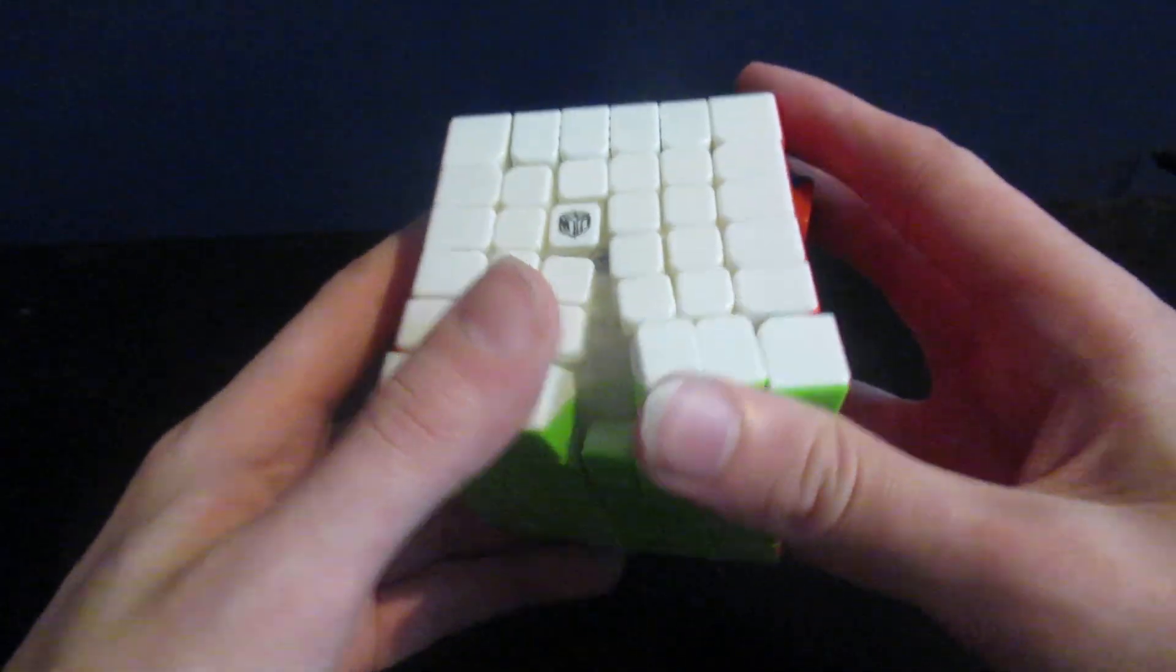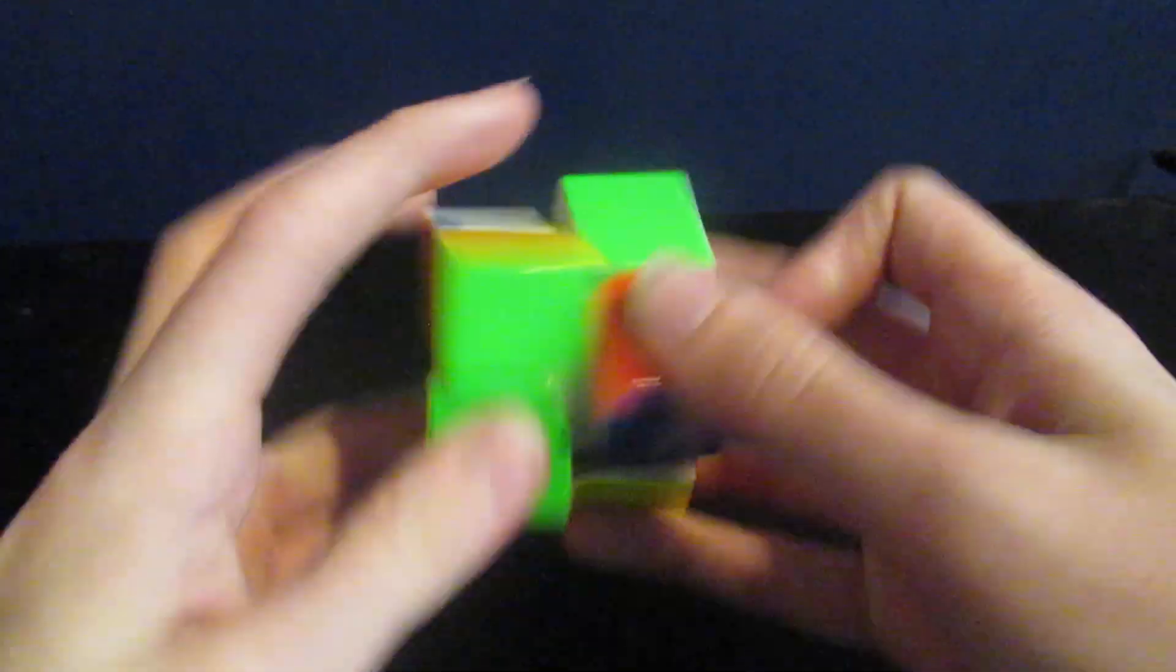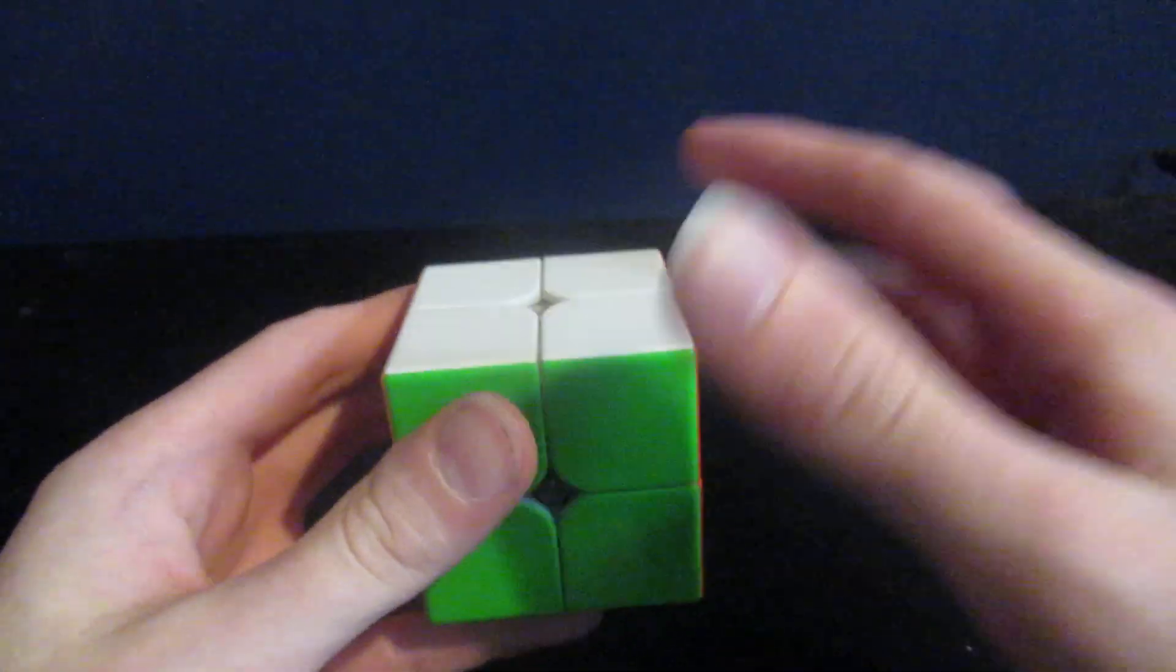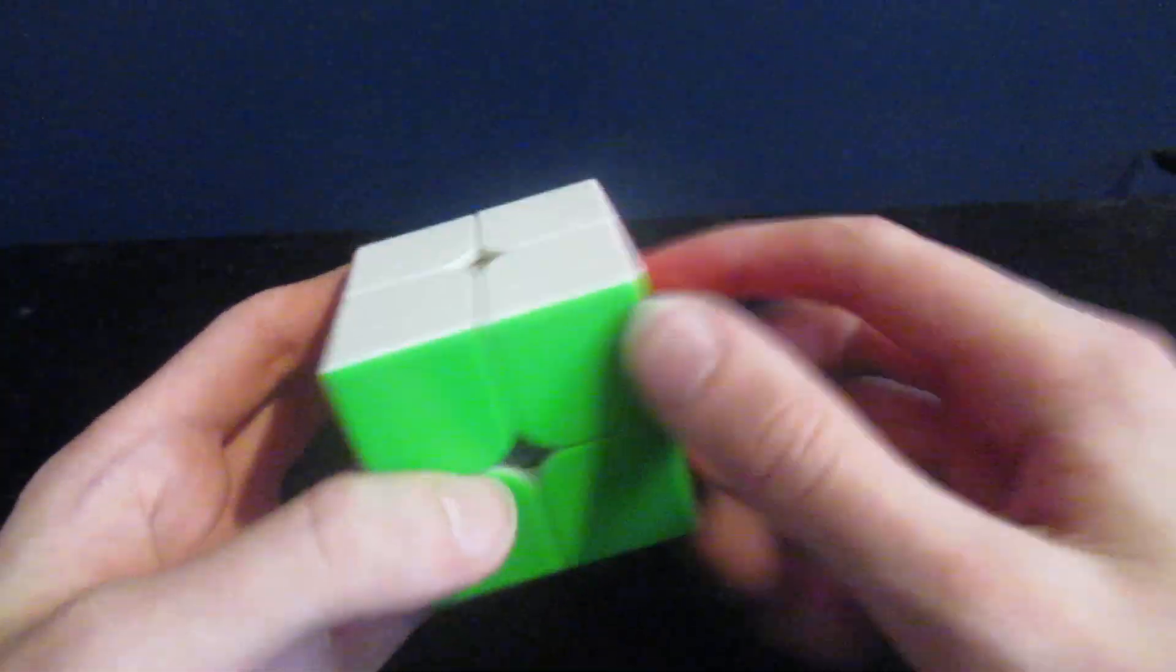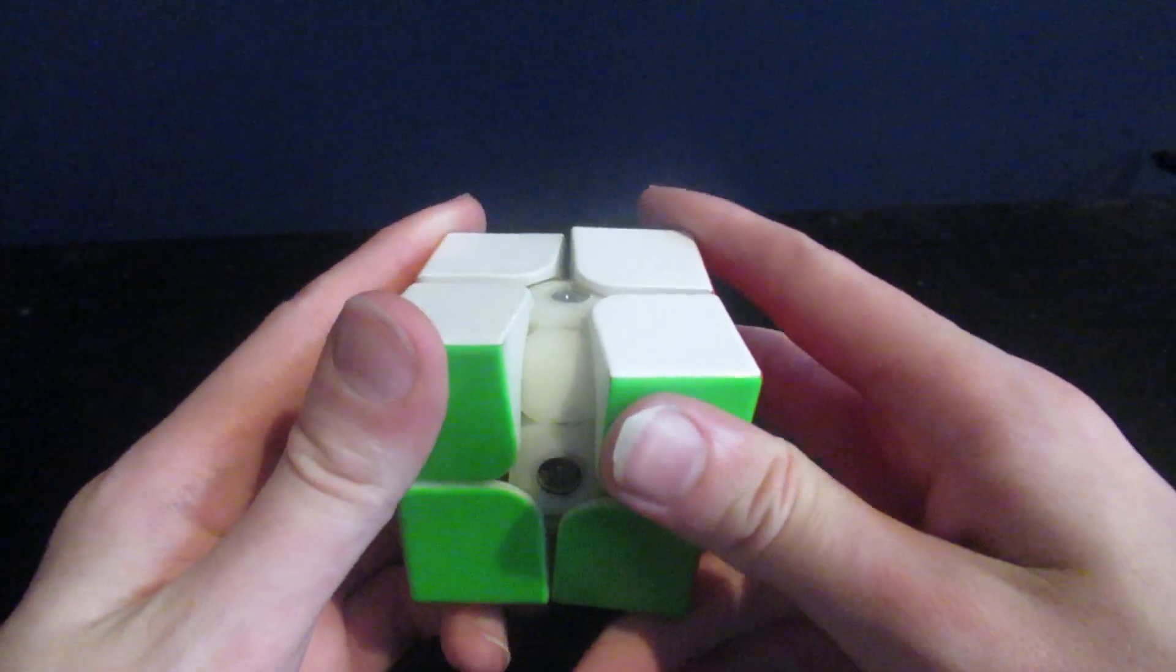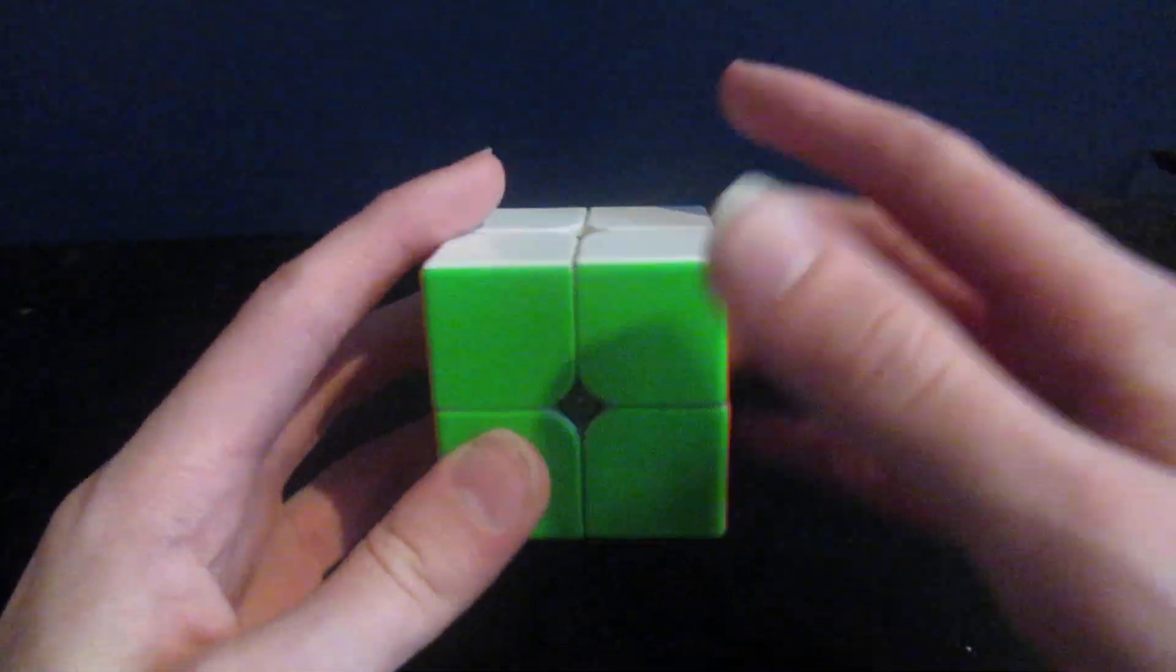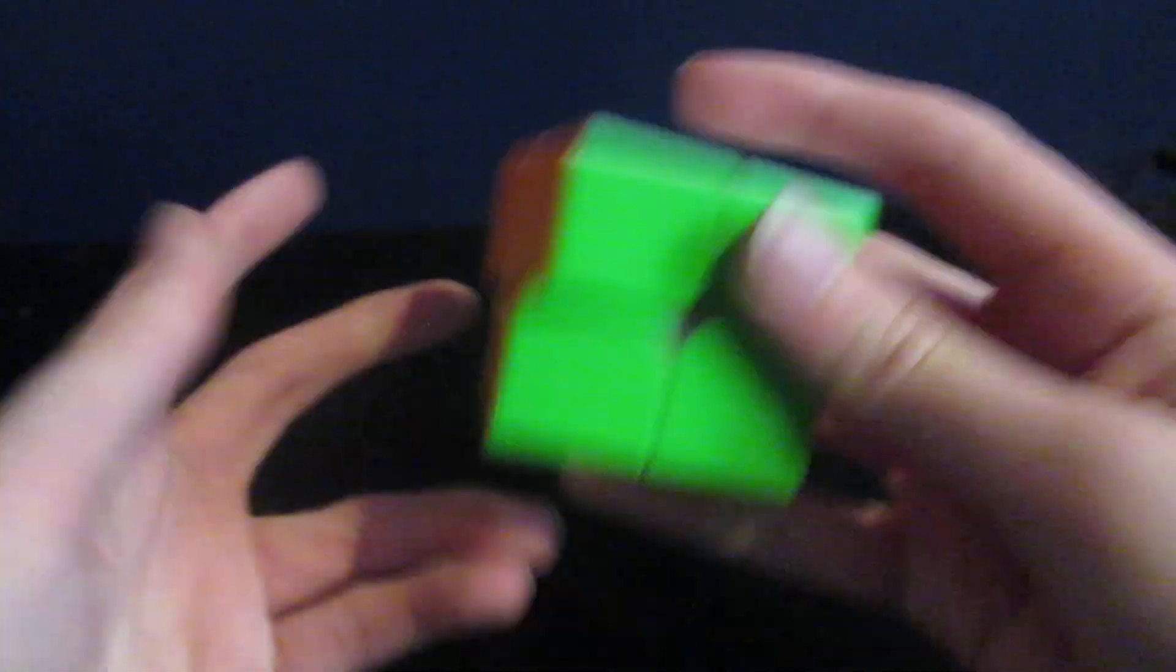For 2x2, I don't know why I didn't do this first, I'm using an MGC Elite. This was originally Angstrom setup but I've had it for two years so the lube has died out. My goals are a sub-3 single and a low 4 second average.